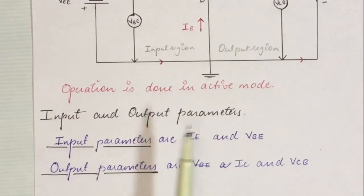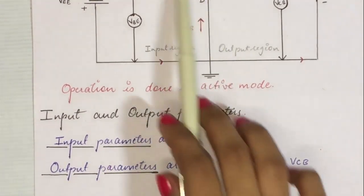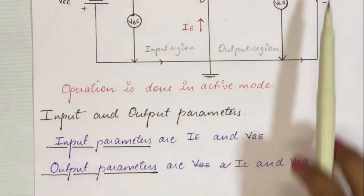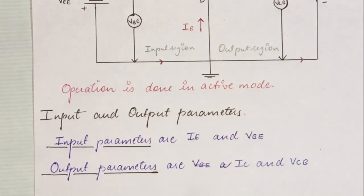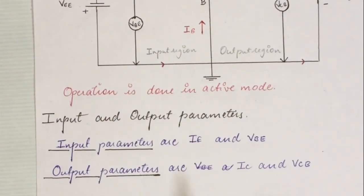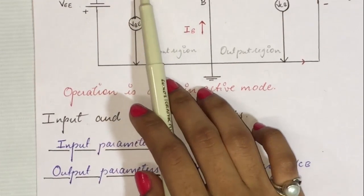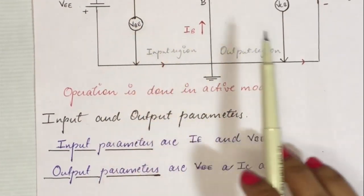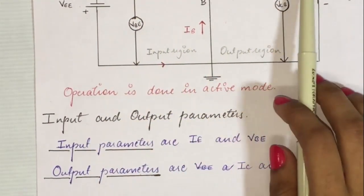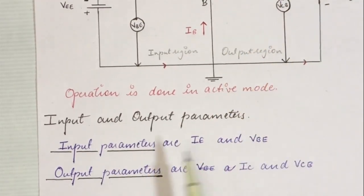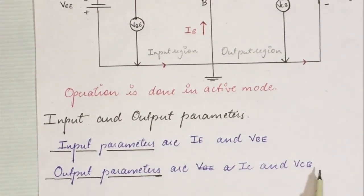For the input and output parameters: input parameters are those related to the input circuit, and output parameters are those related to the output circuit. In the input circuit, we have IE and VBE as the input current and input voltage. In the output circuit, we have IC and VCB as the output current and output voltage. So input parameters are IE and VBE, and output parameters are IC and VCB.